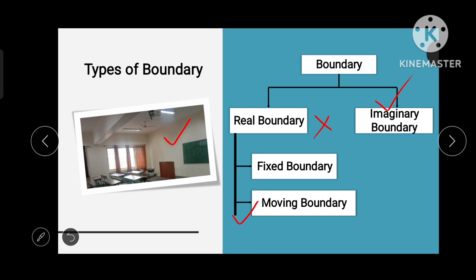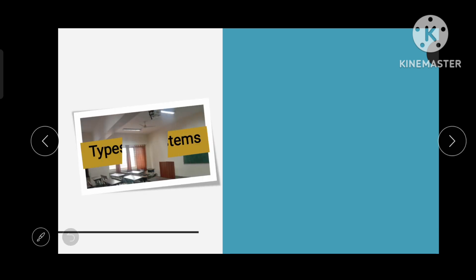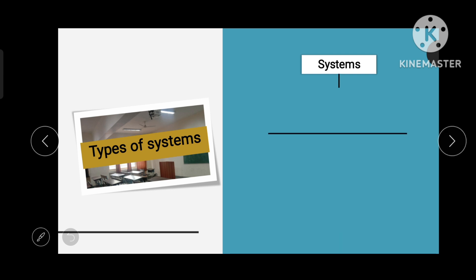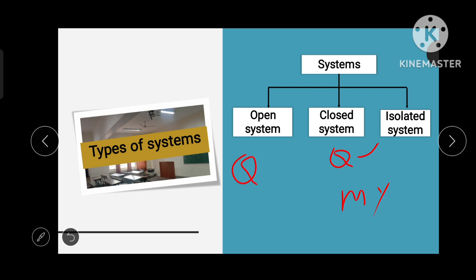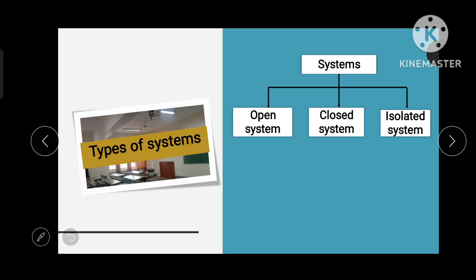These are the types of boundary. Next we will move to the types of systems. There are three types of systems: open system, closed system, and isolated system. In an open system, both mass transfer and energy transfer are allowed between the system and surrounding. In a closed system, only energy transfer is allowed and there is no mass transfer. In an isolated system, there is no mass transfer and no energy transfer.